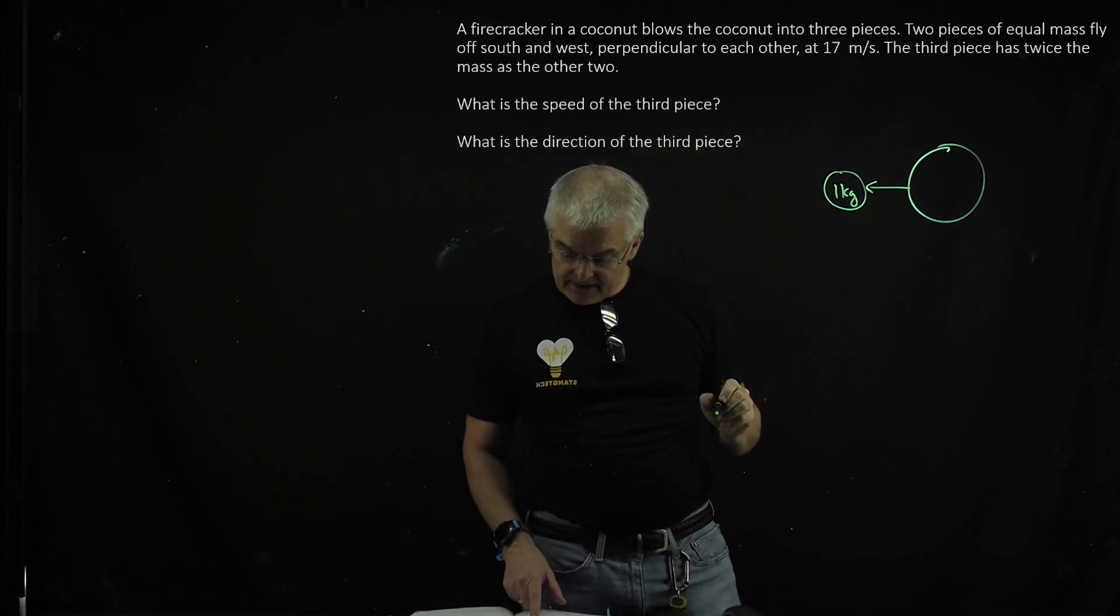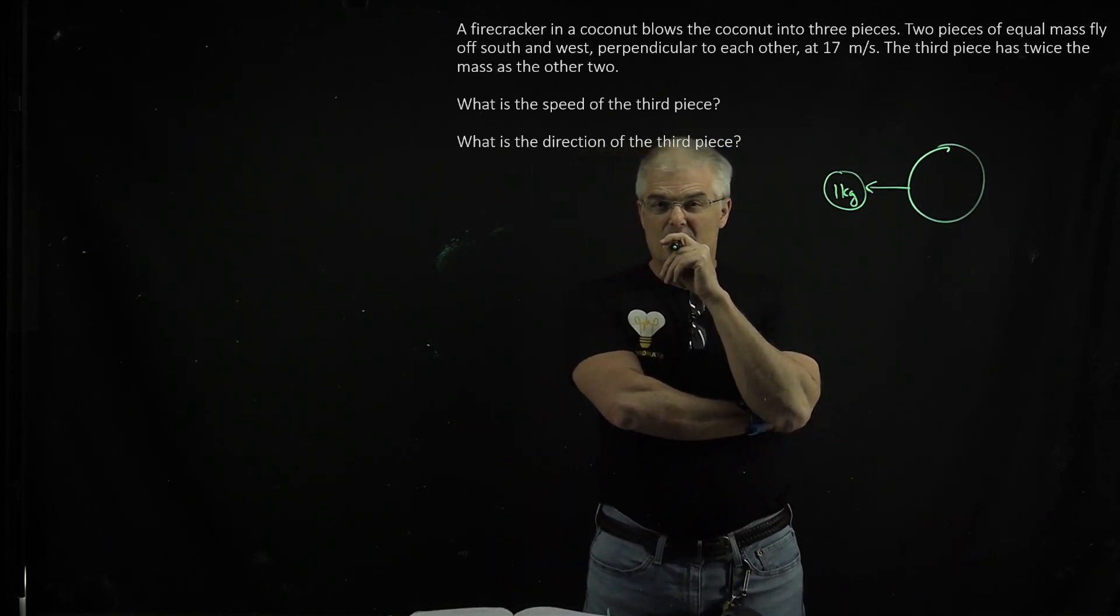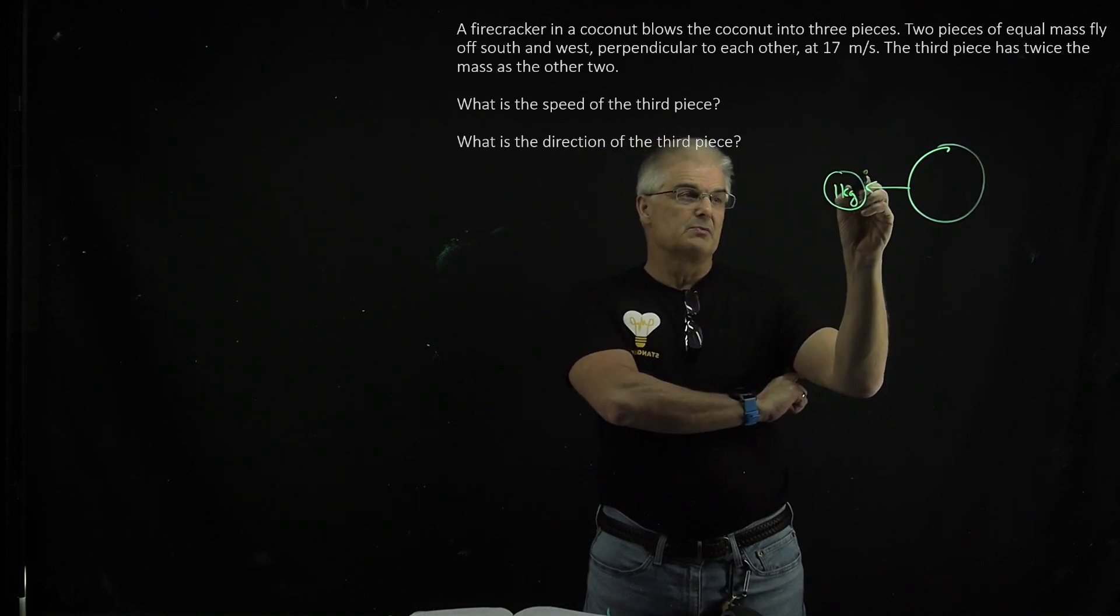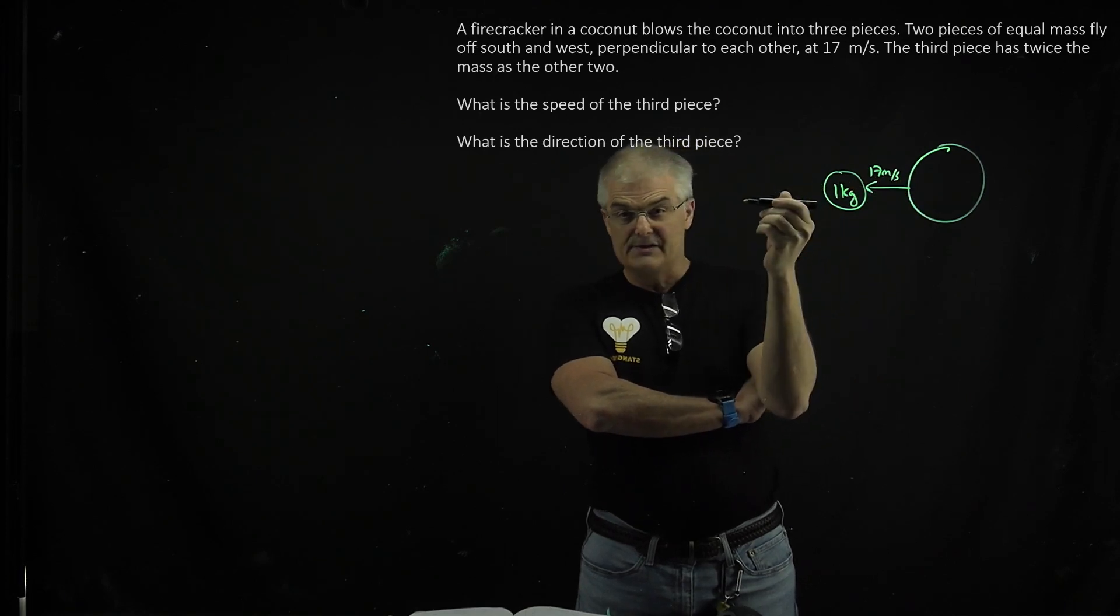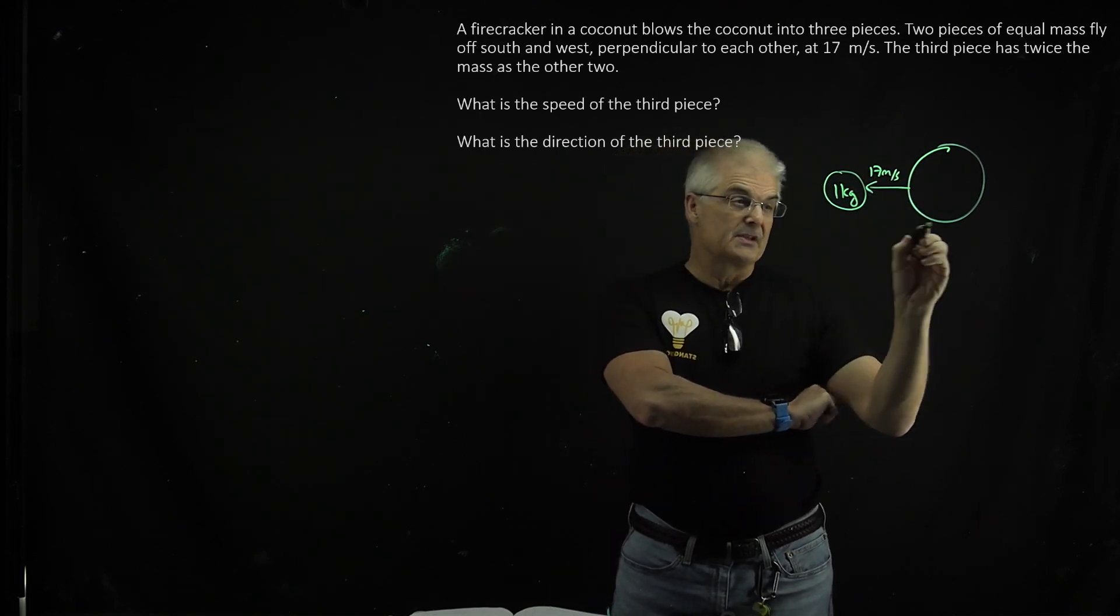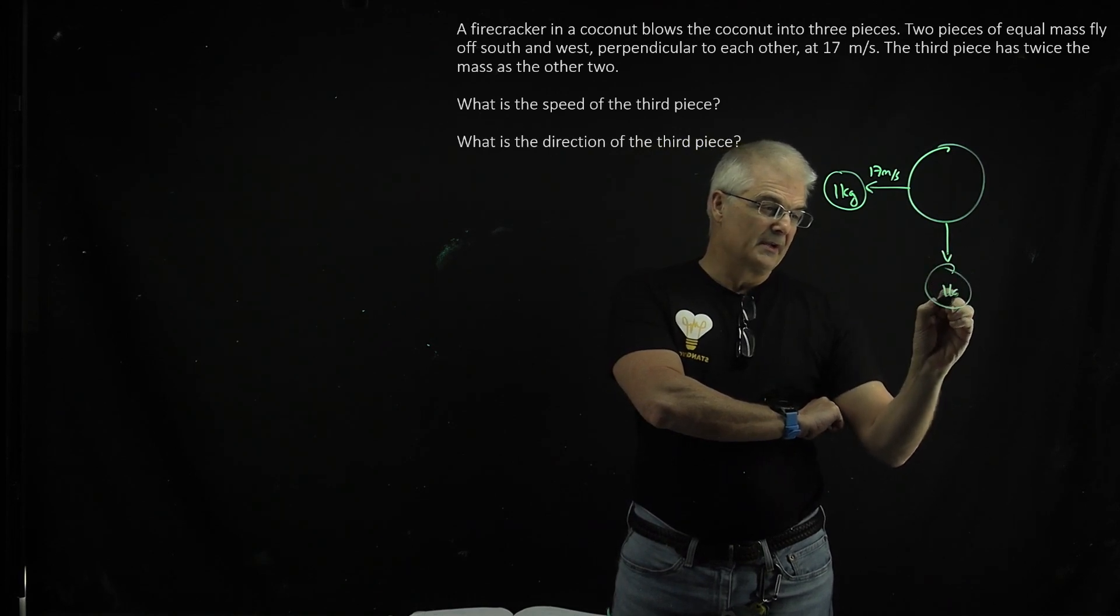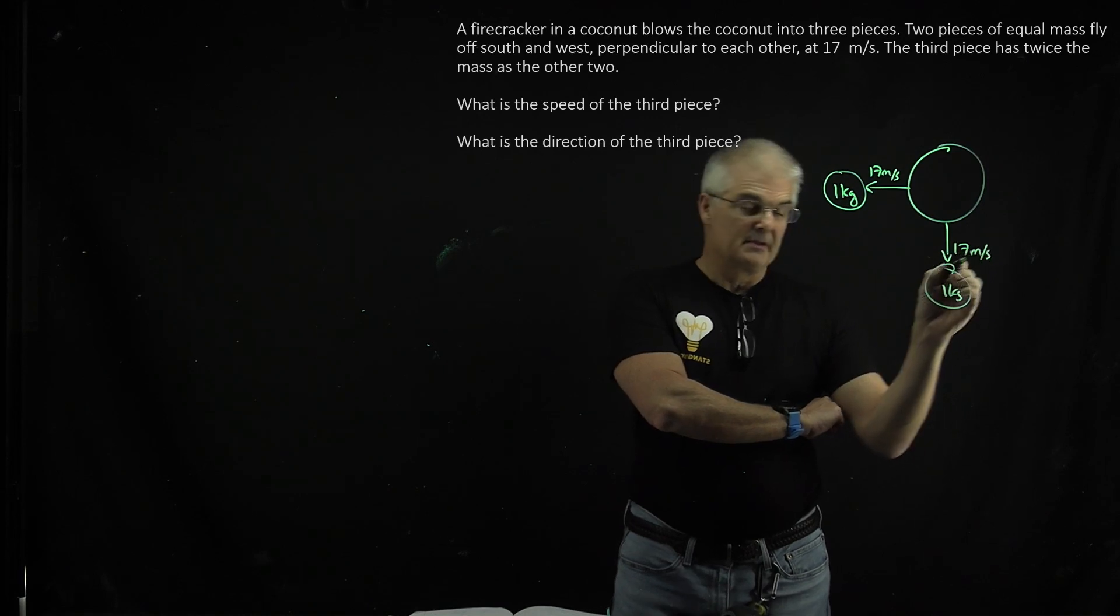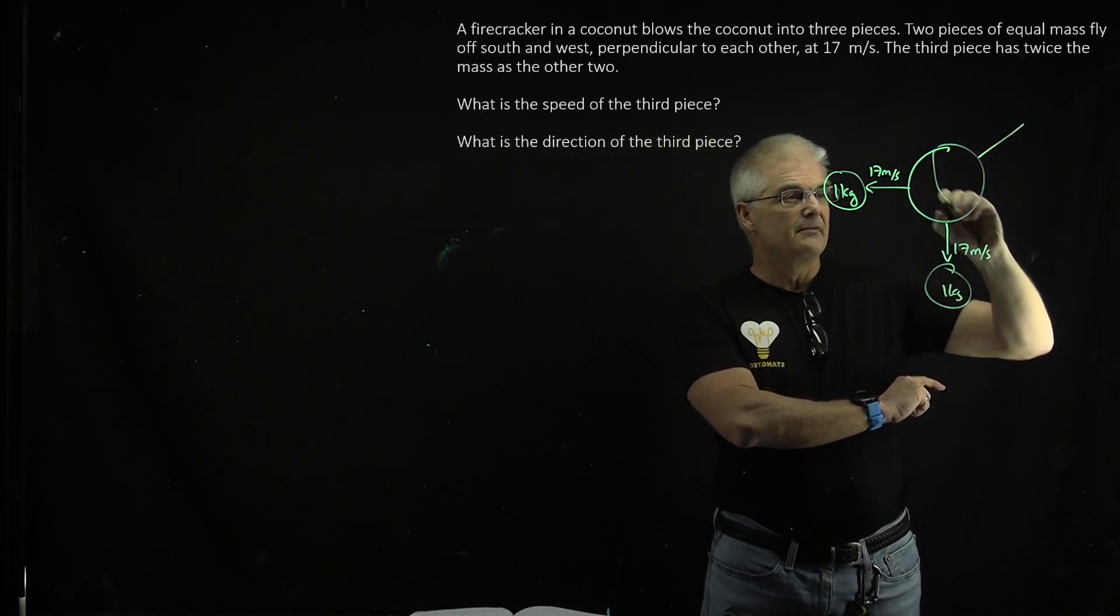It makes life a lot easier, and it's traveling at the same speed. So this is moving at 17 meters per second to the west, and the second one is moving to the south, also one kilogram, and it's moving also at 17 meters per second. And the question is, what's the direction and speed of the third chunk?